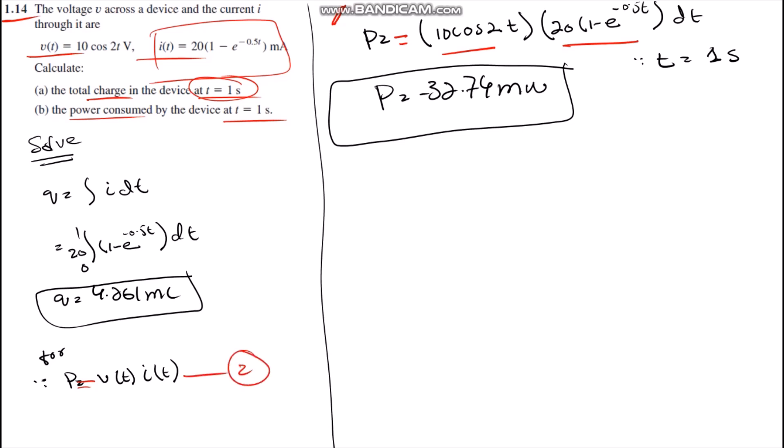After solving with the following values we get the value of power p equals 32.74 milliwatts at time equals one second. Thanks for watching.